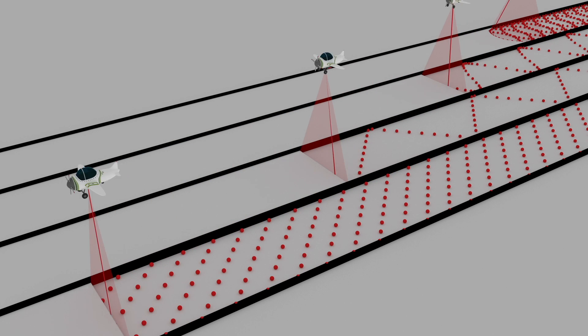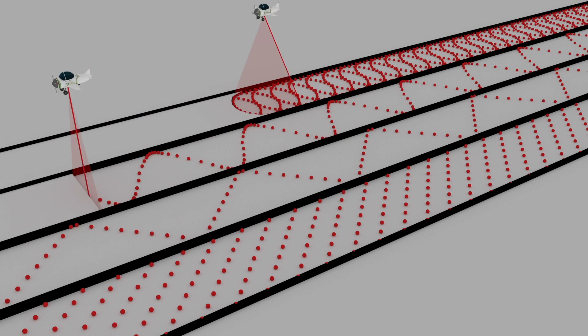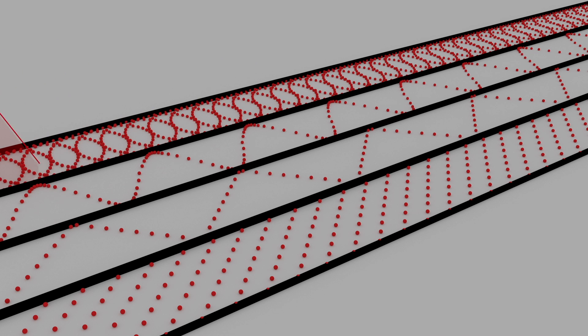If you scan it in a zigzag pattern or linearly or in a circle, you might have a very different grid pattern on the surface.